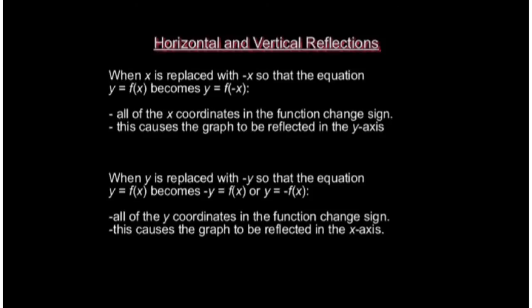When y is replaced with minus y, so that the equation y equals f of x becomes minus y equals f of x, or if we brought the negative sign over to the other side, y equals negative f of x, all of the y coordinates in the function will change sign. And this will cause the graph to be reflected in the x axis.